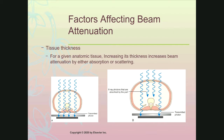One of the factors that affects beam attenuation is tissue thickness. For a given anatomy, when you increase the thickness, you increase the beam attenuation — either by absorption or by scattering. When you have a thicker part, there's more chance of the x-ray interacting within that part than with a thinner part. So increasing thickness increases attenuation; decreasing thickness decreases attenuation.